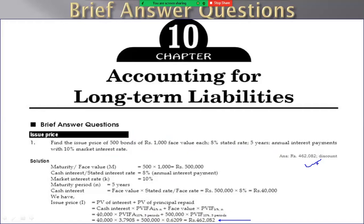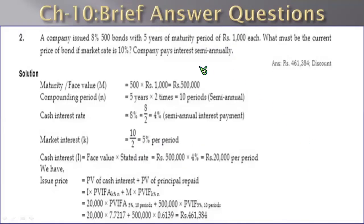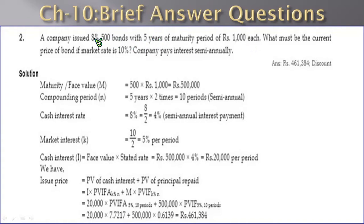The issue price is approximately Rs.462,082. Question number 2: a company issued 8% bonds, 500 bonds with 5 years maturity period, Rs.1000 face value, 8% interest rate. What must be the current price of the bond if the market rate is 10%? The company pays semi-annually.